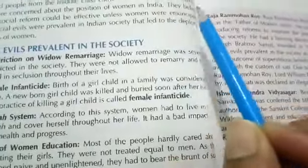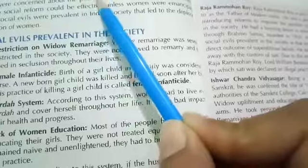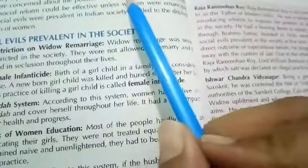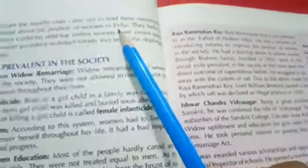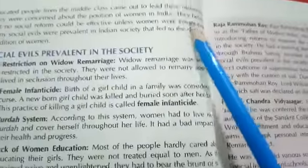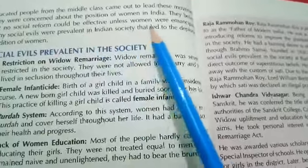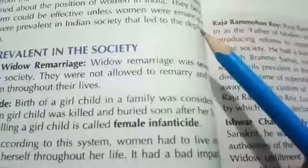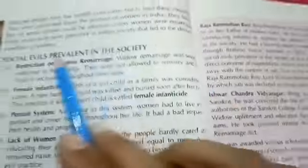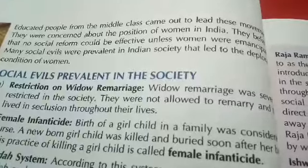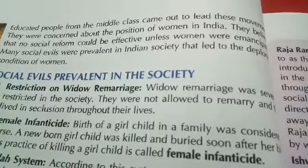That educated people from the middle class had to lead these movements. They were concerned about the position of women in India — they knew what women's positions were. No social reformer could be effective unless women were emancipated. Many social evils were prevalent in Indian society that led to the deplorable condition of women.